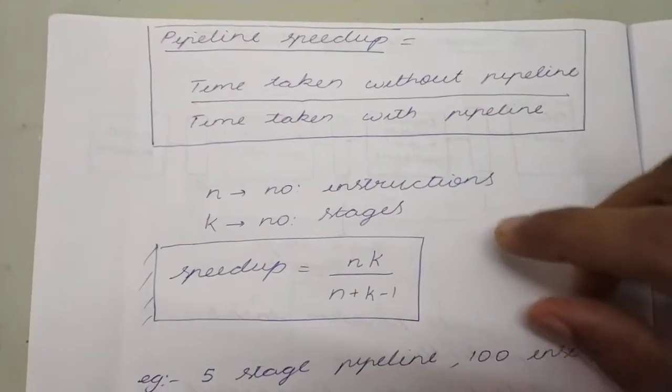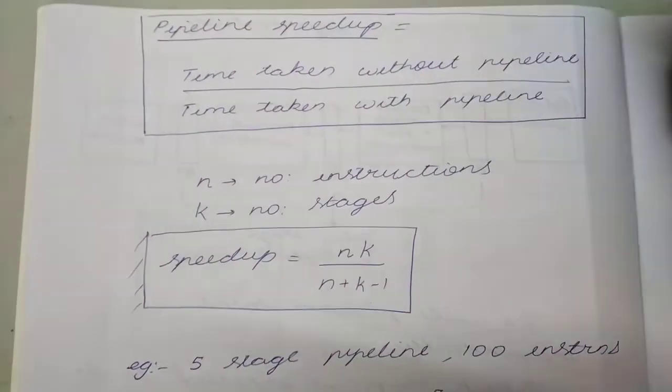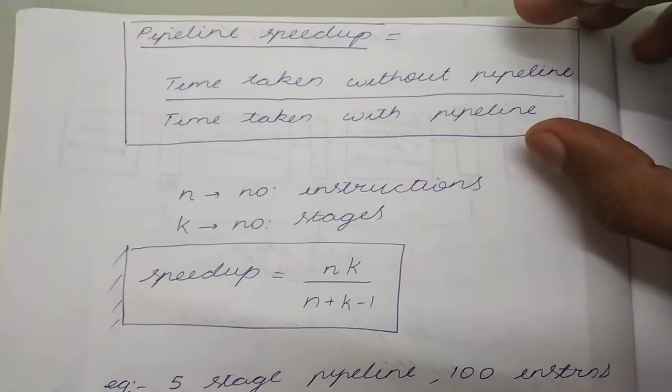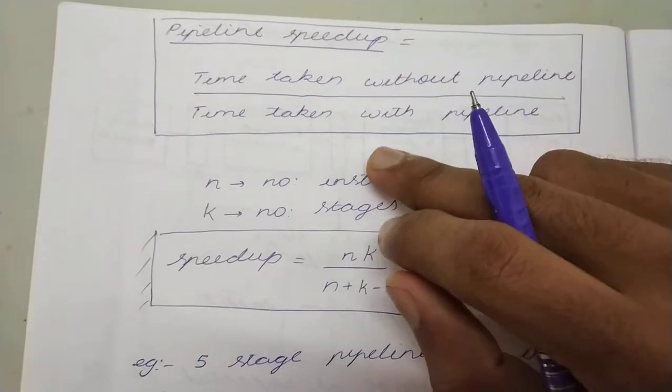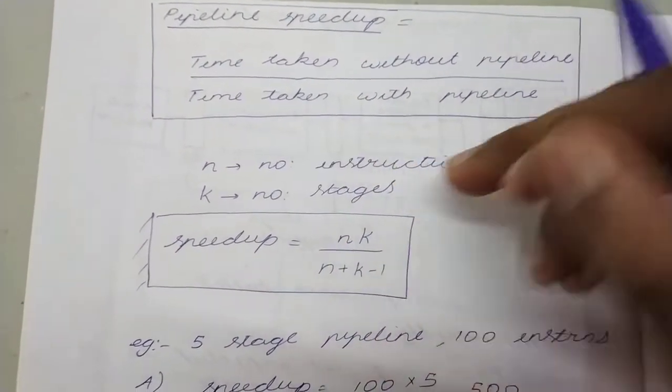Now we go into the important concept of pipeline speedup. Basically, pipeline speedup is a fraction of the time taken without pipeline by the time taken with pipeline.